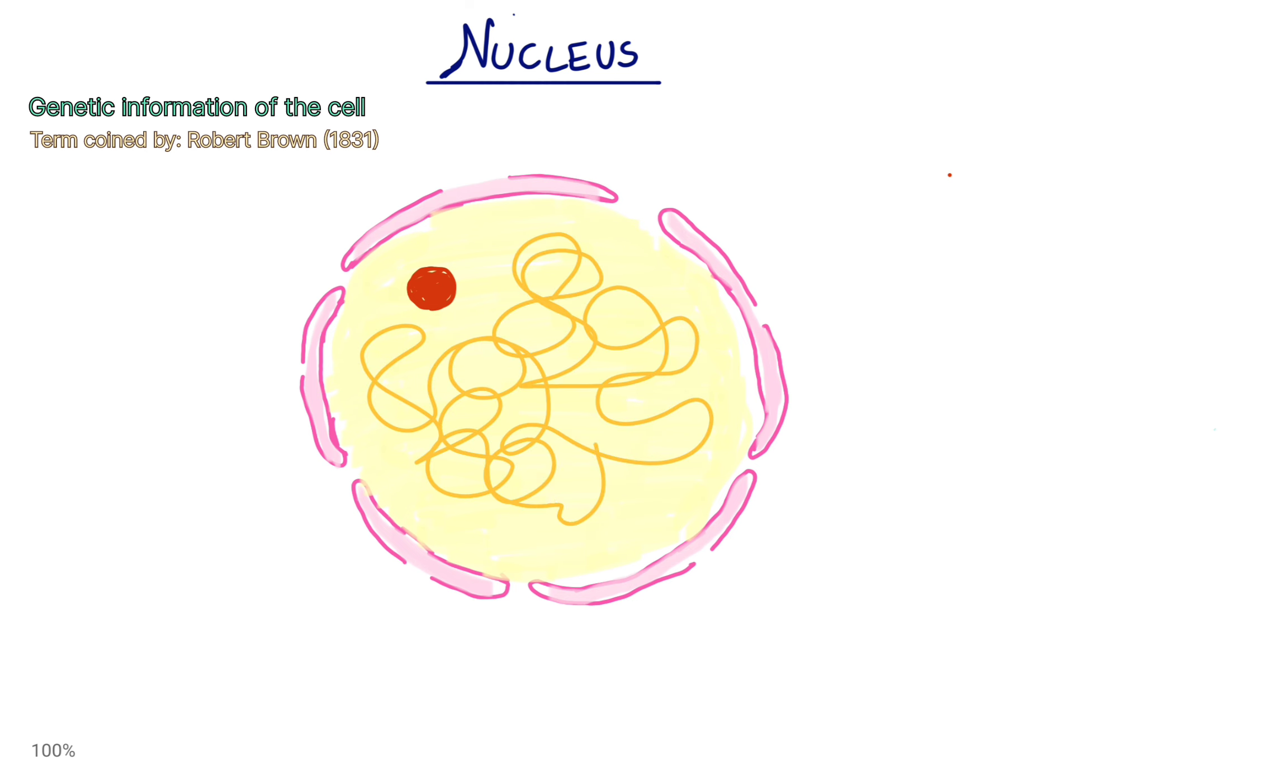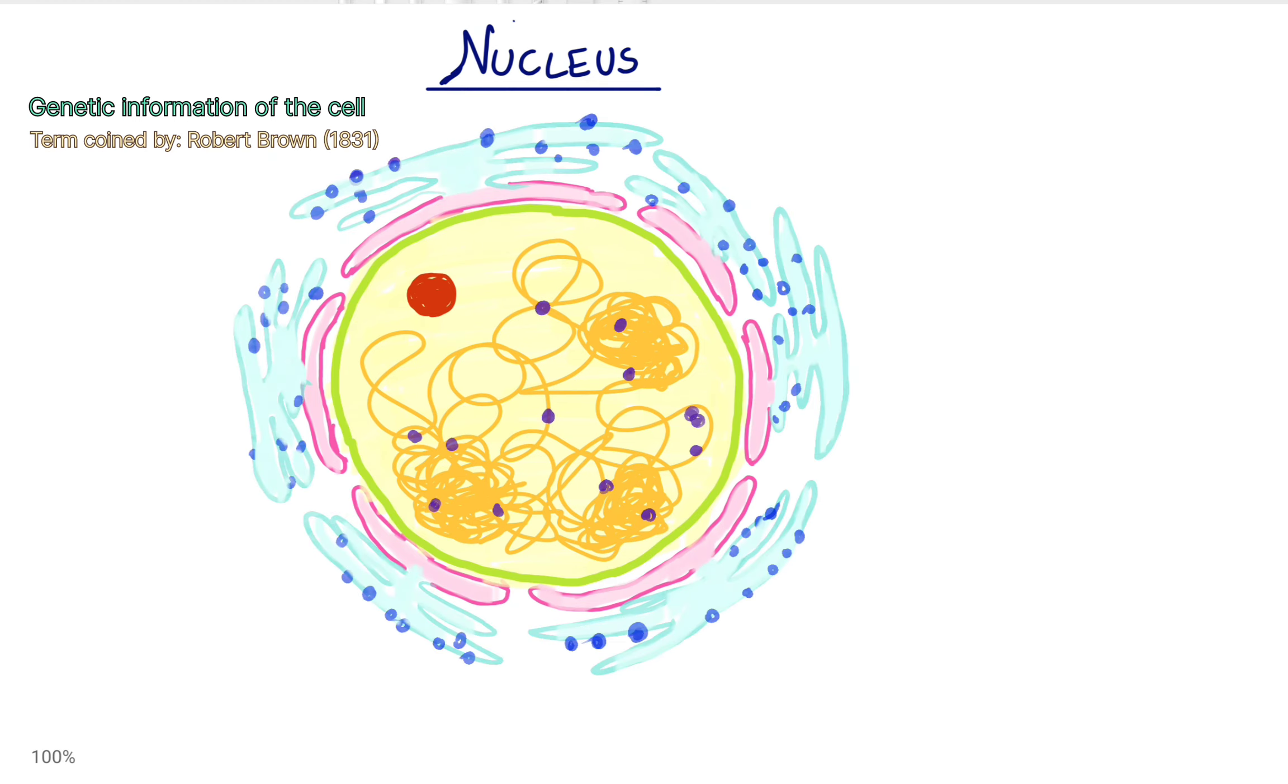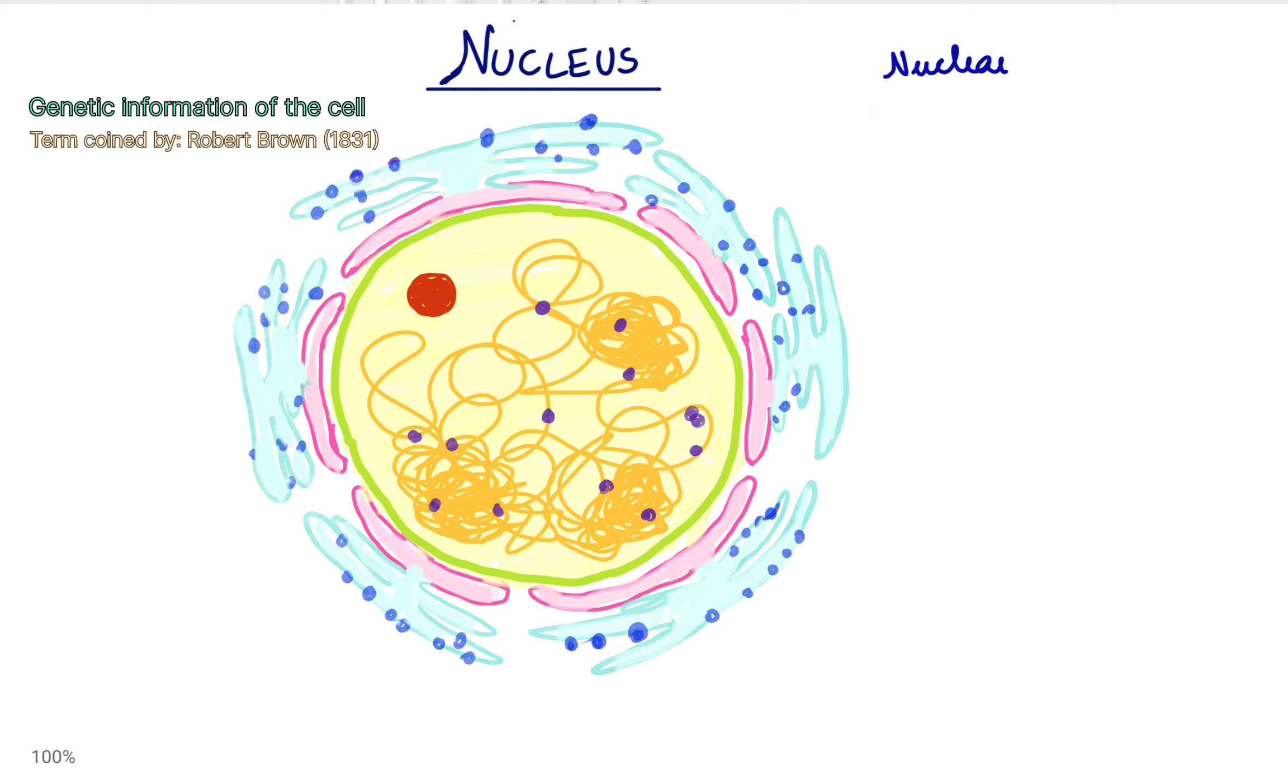The nuclear membrane, the outermost layer of the nucleus, is a double layer of phospholipids with a gel-like matrix in between, called the periplasmic space. The periplasmic space in between the nuclear membrane is actually 10 to 50 nanometers wide.